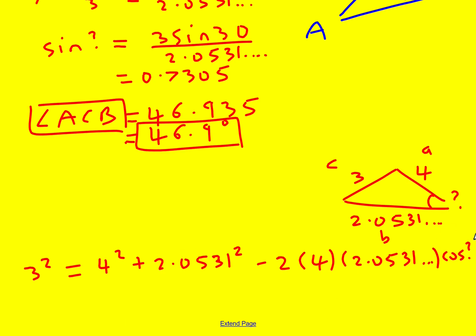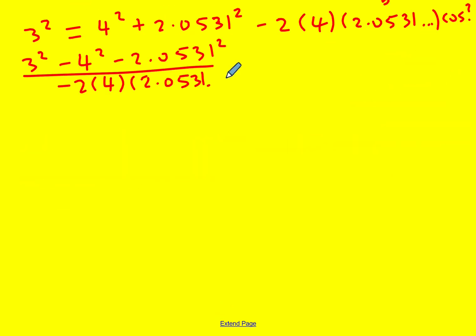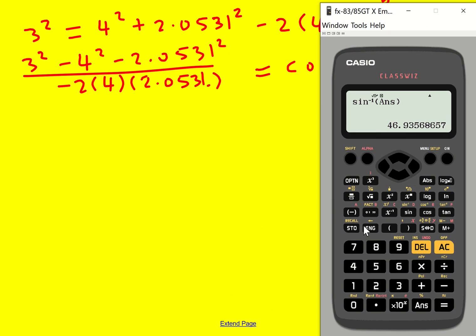And I can minus this from everything. And then I can divide through by that. 3 squared minus 4 squared minus 2.0531 squared. That's equal to, that would be equal to all of this. I'd have to divide through by that coefficient. So I can do that all in one go. And that is equal to cos question mark. So I haven't got the exact answer now, but I've written it down to five digits. So that'd be enough. So we get 0.6828.